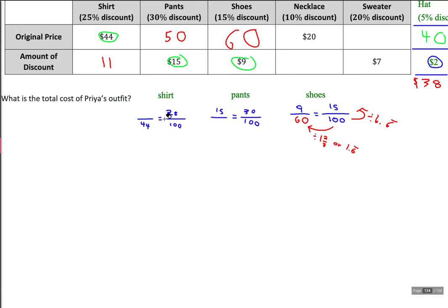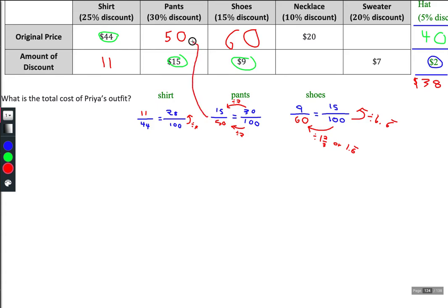You look at these and think, how do I solve them? Well, these are pretty easy because 25 is just 100 divided by 4, so I can do 44 divided by 4 in my head to get 11 — that's the discount amount. Likewise, 15 is just 30 divided by 2, so 100 divided by 2 is 50, and that's where I got 50 from. Sometimes they're super easy to do mentally.